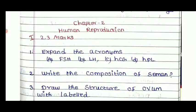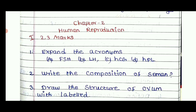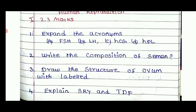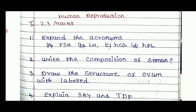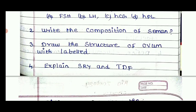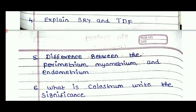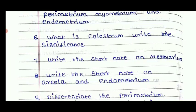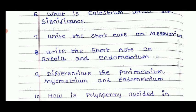For Chapter 2, Human Reproduction, important questions include: abbreviations FSH, LH, HCG, HPL and their significance; the composition of semen with a labelled diagram; explain SRY and TDF; differences between perimetrium, myometrium, and endometrium; what is clitoris and its significance; write a short note on mesovarium; and write a short note on endometrium.